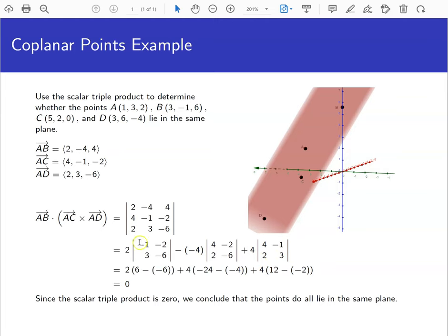Now do your determinants. 6 minus a -6 for that one, so that's 12 times 2, which gives you 24. -24 minus a -4 gives you -20 times a positive 4, which gives you -80. 12 minus a -2, so this is 14 times 4, which gives you 56.